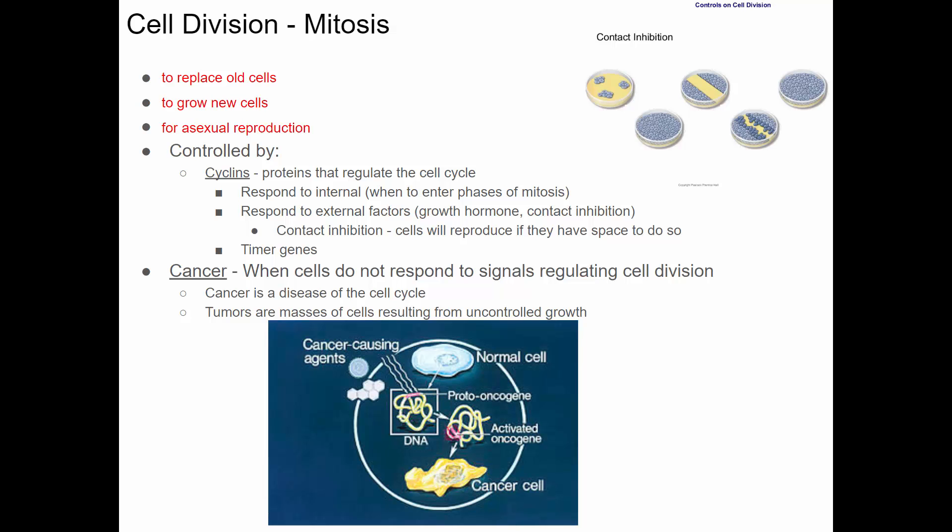Growth hormone encourages cells to divide. There's also this concept of contact inhibition. If you take some cells in a culture on a petri dish and give them the right conditions and put in a few cells, they will start to divide and they'll do so until they fill up the entire petri dish. But once they do that, they stop dividing. That's called contact inhibition — when the cells are touching other cells, they stop dividing.